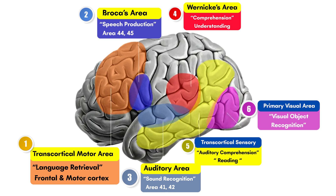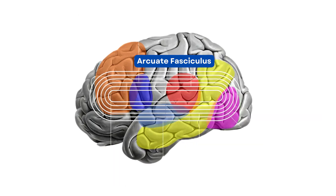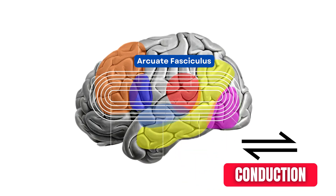After understanding all these important areas and their role in comprehension and production of language, there is one more structure in the story that connects and coordinates all of these areas. It is called the arcuate fasciculus. The arcuate fasciculus is a dense collection of neuronal pathways which connects with all these important areas, and therefore its function is called conduction.